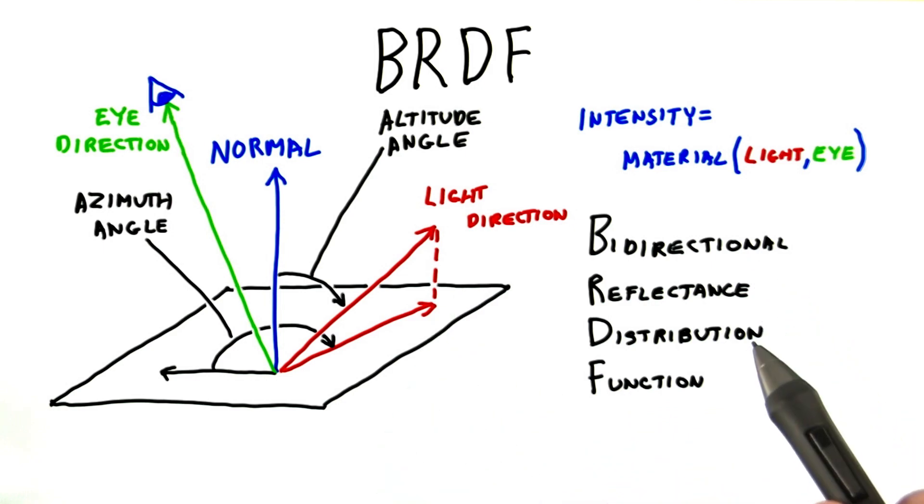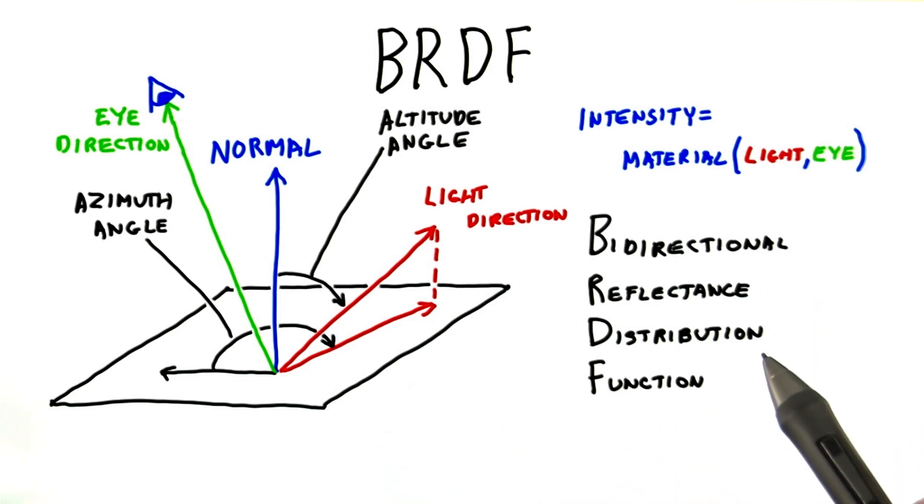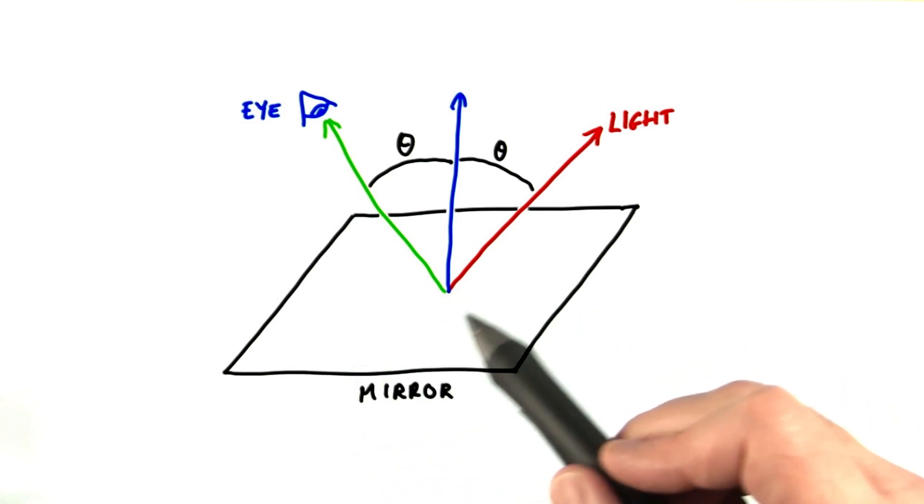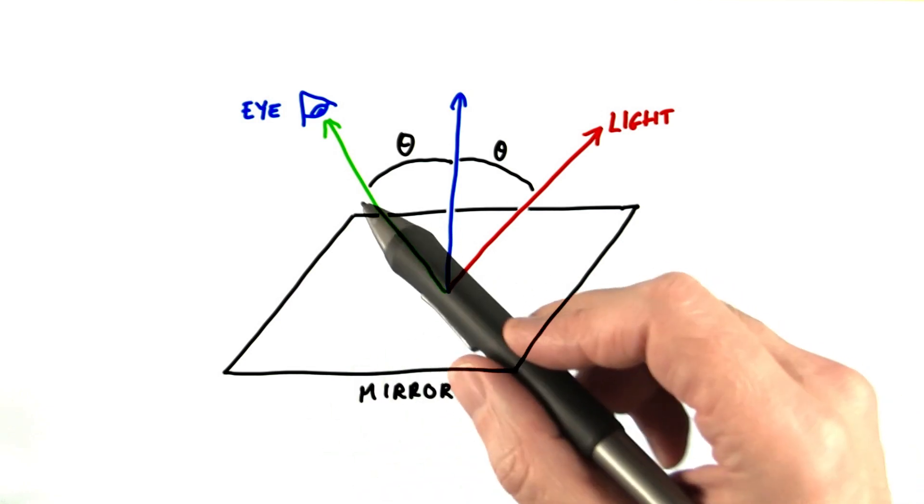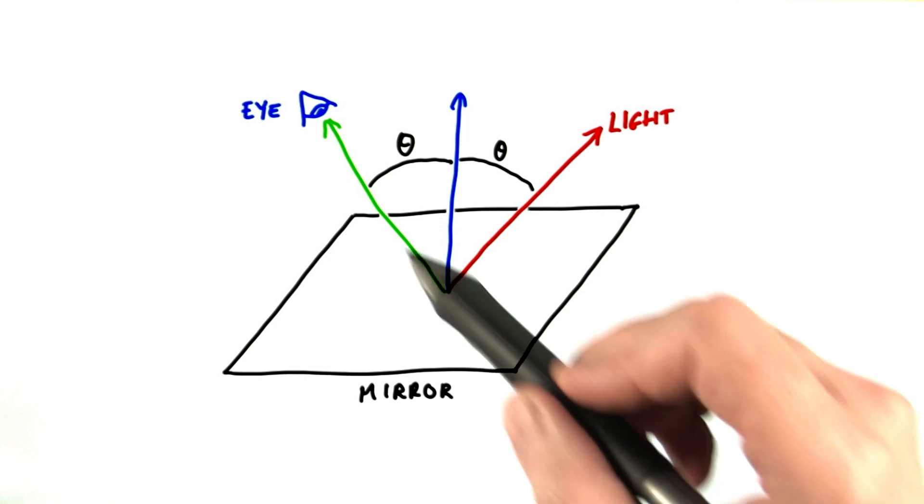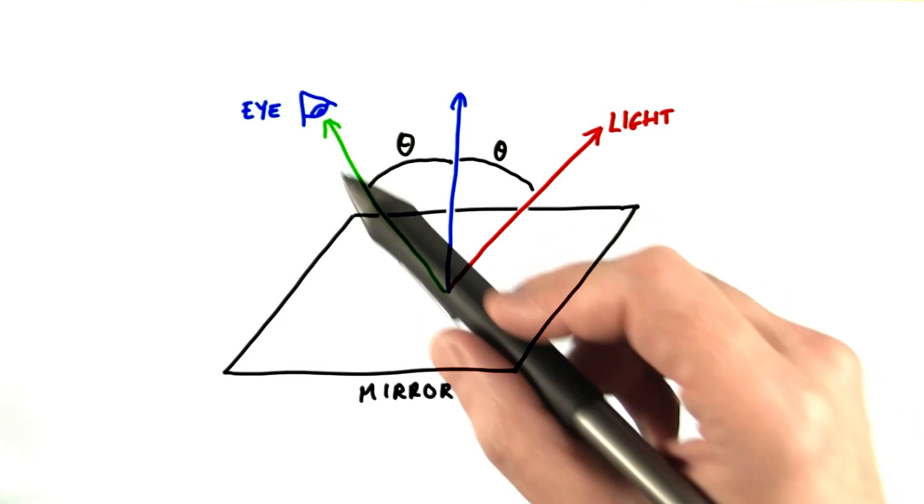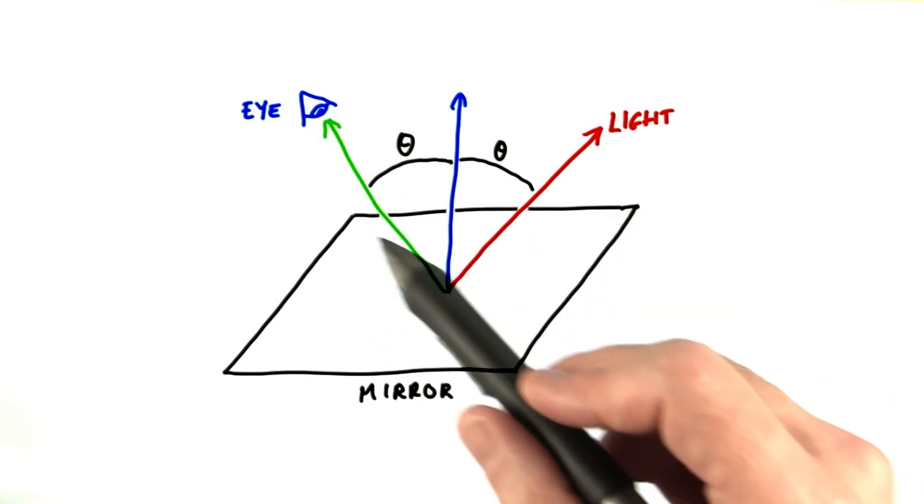The phrase reflectance distribution means how the light is spread. One simple example is a perfect mirror. The reflectance distribution in this case is that when the eye's direction is exactly equal to the light's reflection direction, all light is reflected towards the eye. Every other eye direction gets no light.